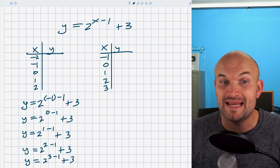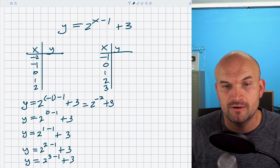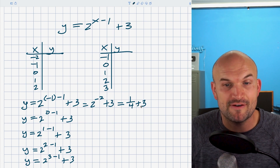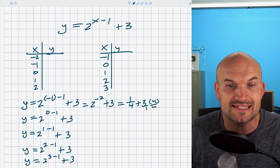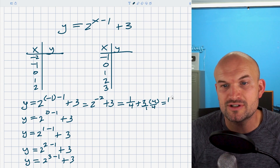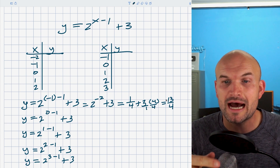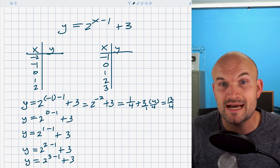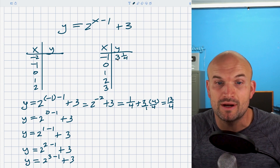For x equals negative one: negative one minus one is negative two, so we have two raised to the negative second power plus three. Two to the negative second power is the same as one over two squared, which is one over four, plus three. To combine these, I put three over one and multiply by four over four to get a common denominator. That gives me twelve over four plus one over four, which equals thirteen fourths. Think of this as a mixed number — four goes into twelve three times with one extra unit — so that's three and one fourth, or 3.25.